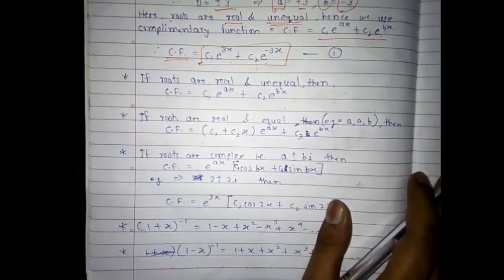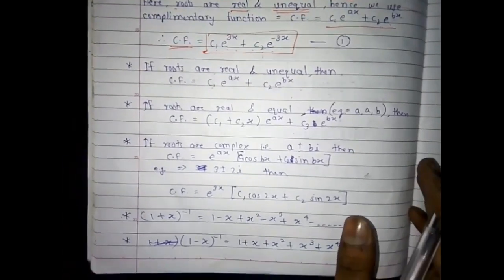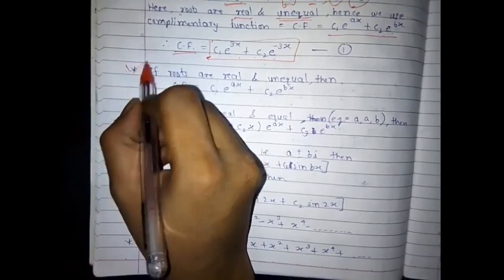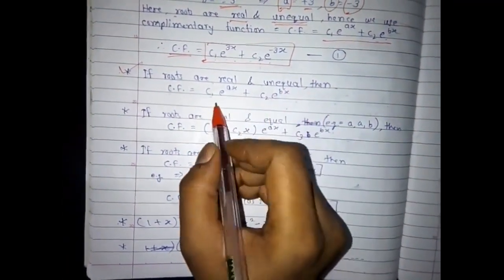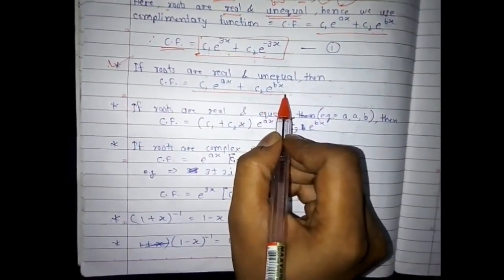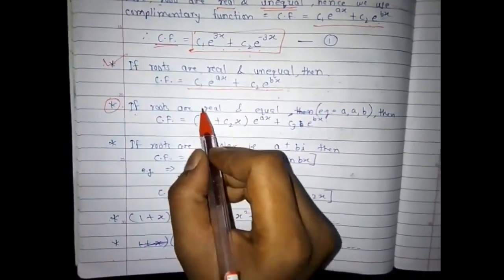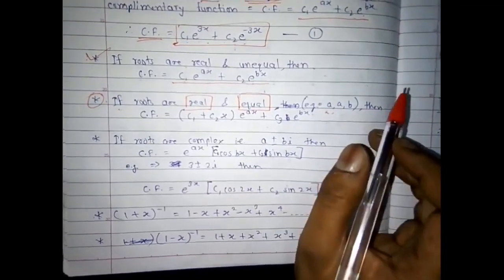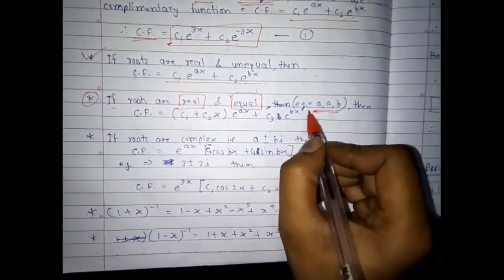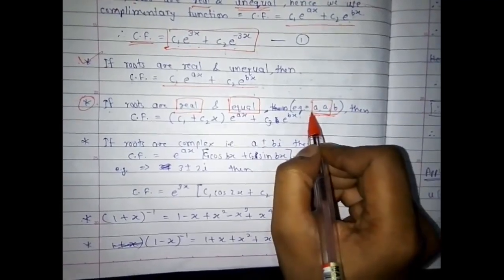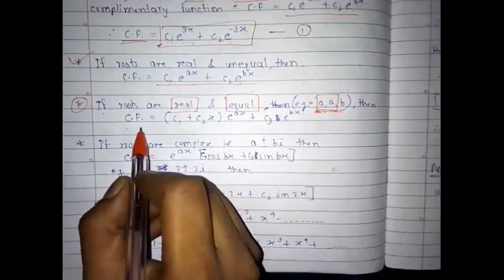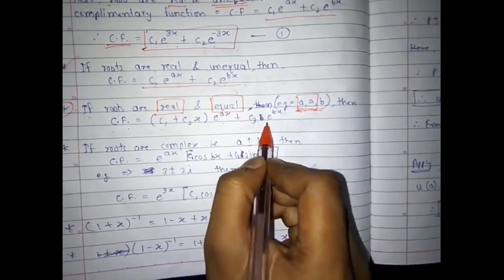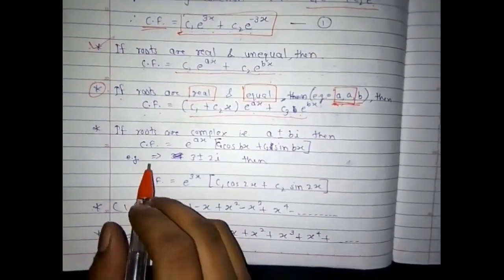Now let us see other possibilities for roots. If roots are real and unequal, CF = c₁e^(ax) + c₂e^(bx). If the roots are real and equal — for example, if root a is repeated twice and b is distinct — then the complementary function becomes CF = (c₁ + c₂x)e^(ax) + c₃e^(bx).